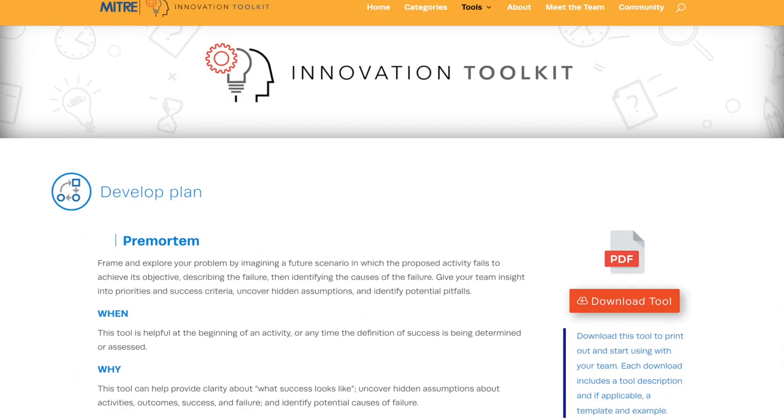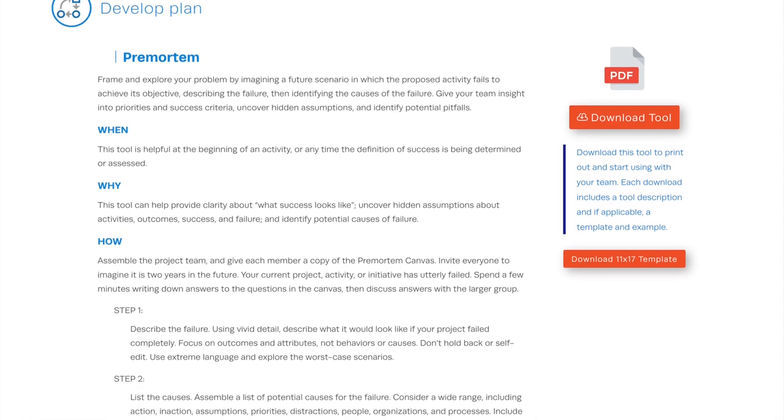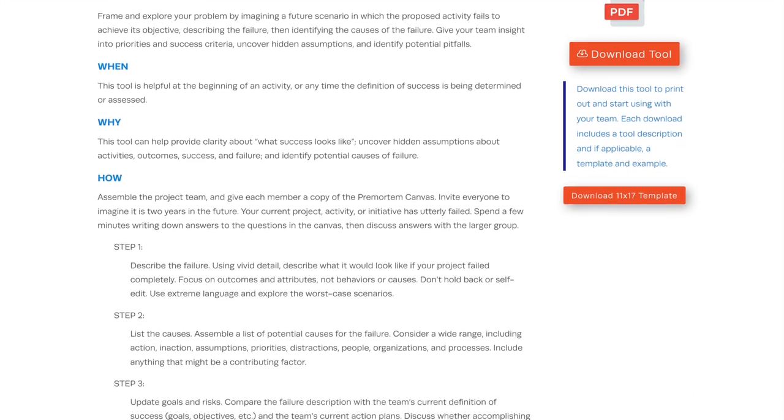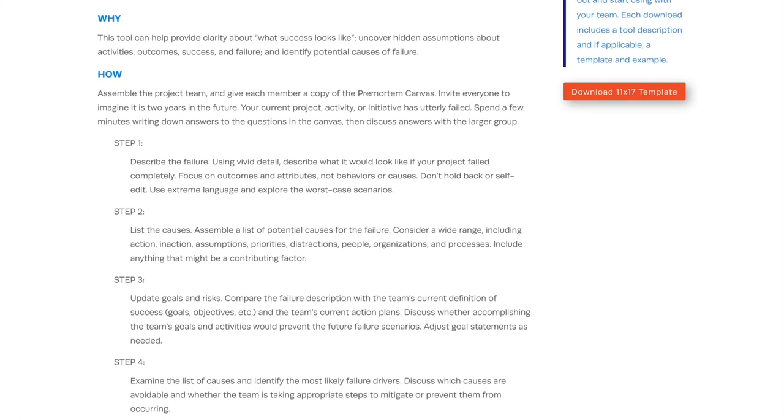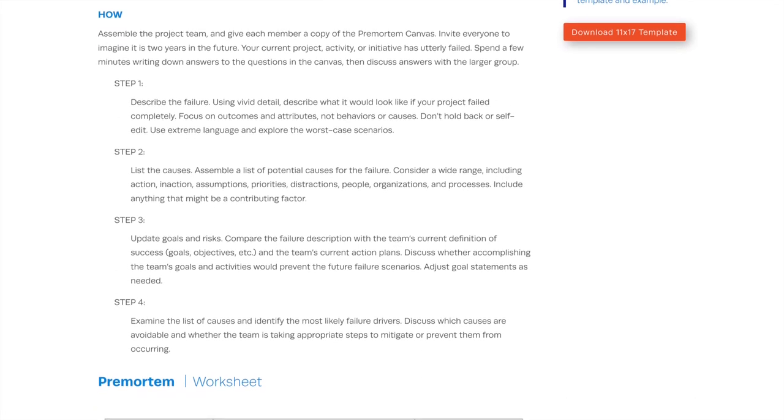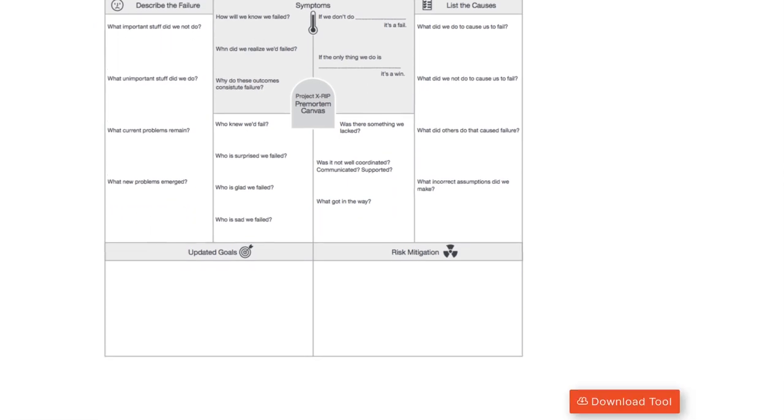For each tool, the high-level innovation objective is listed at the top of the page, followed by the tool title and a brief description of its purpose. You can read about when to use the tool, why the tool is helpful, and step-by-step instructions on how to use it.